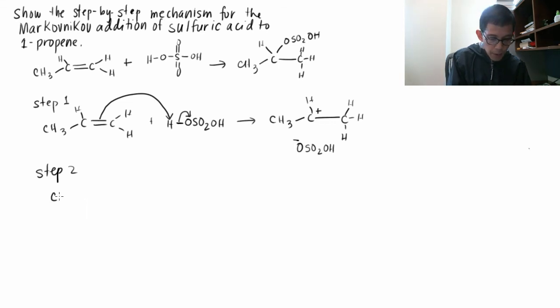We have CH3-CH(+)-CH3 and the anion OSO2OH(-) produced in the first step. The oxygen with negative charge will attack the carbon that is positively charged.